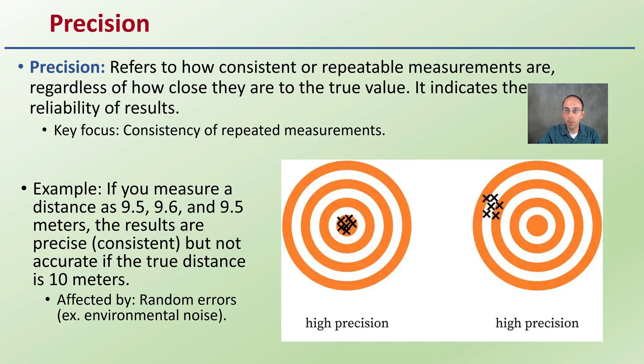What does precision mean then? Precision refers to how consistent or repeatable the measurements are regardless of how close they are to the true value. It indicates the reliability of the results. We can see our two examples here. This has high precision, but this also has high precision. You can see all of those x's are in a very tight clumping.